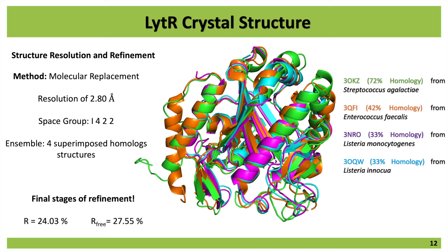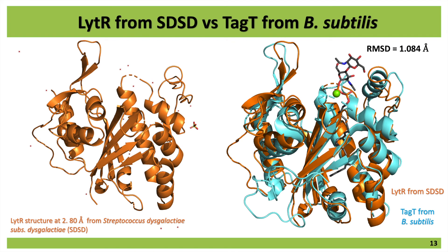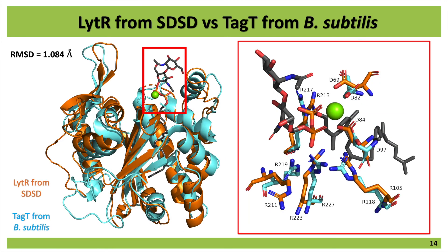I'm now at the final stages of refinement. Here is the structure at the current refinement stage. I then superimposed the structure with a homologous one from Bacillus subtilis containing a bound substrate, and as you can see, the general topology of the proteins is really close. Here I'm depicting the conserved residues that are important for the activity of these proteins: the two aspartic residues and the arginine residues that stabilize the pyrophosphate group. The aspartic residues are stabilizing the magnesium ion, which is also very important for the activity of these proteins.